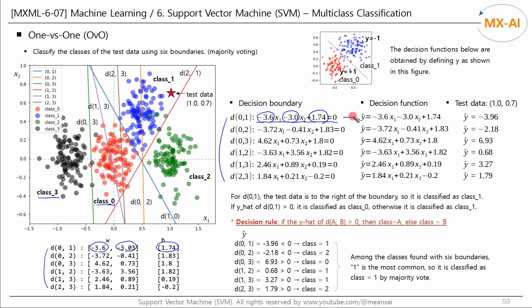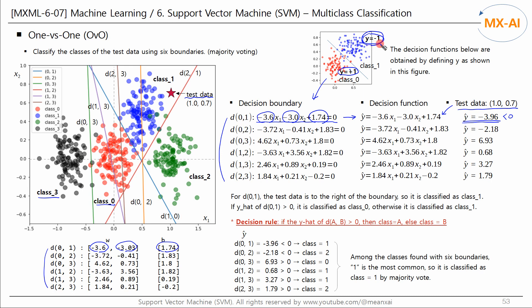The decision function for this boundary is like this. Here's a test data point. Let's use these boundaries to predict the class of this test data point. When we input the test data point (1.0, 0.7) into the first decision function, it outputs Y hat as negative 3.96. These decision boundary equations were obtained by assuming that Y in the region to the left of the boundary is defined as positive 1 and Y in the region to the right is defined as negative 1. Since Y hat is negative 3.96, which is less than 0, we predict that the test data point belongs to class 1.